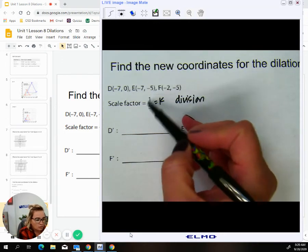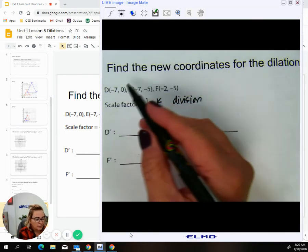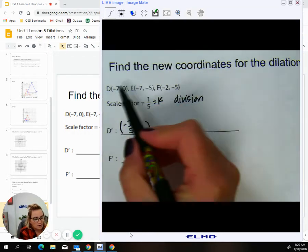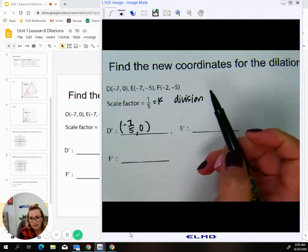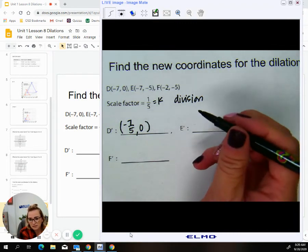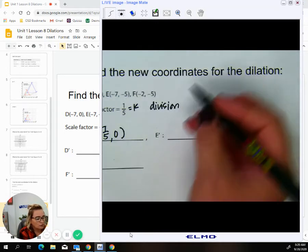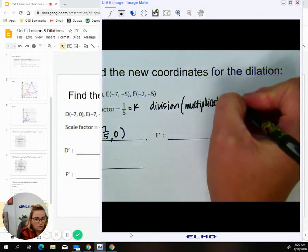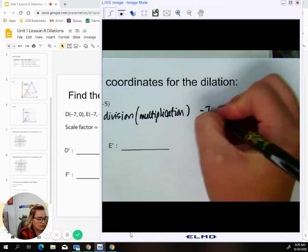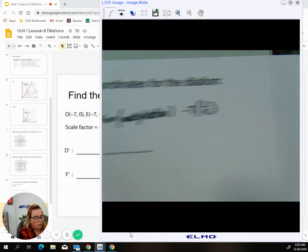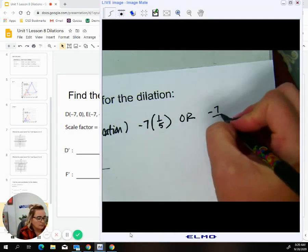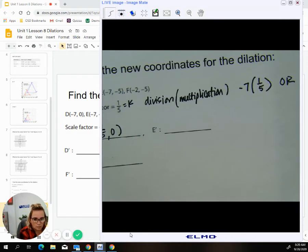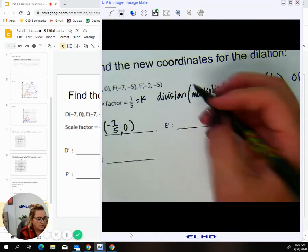So if I'm going to multiply everything by one-fifth, this is going to get me negative seven-fifths and zero. Negative seven, right? We're going to divide by five, basically, is what we're doing. So if you change this to multiplication, you would be taking negative seven times one-fifth or negative seven divided by five.